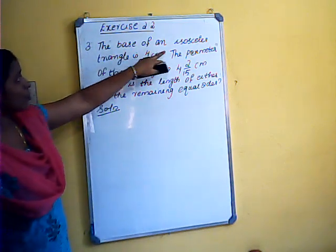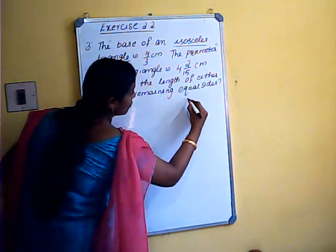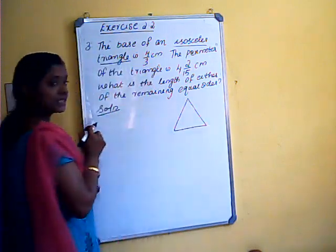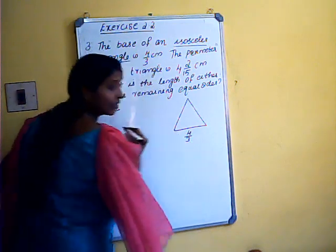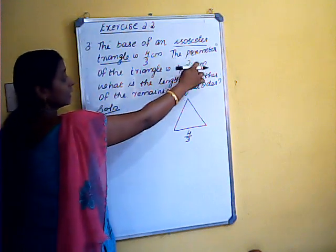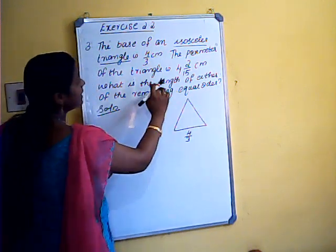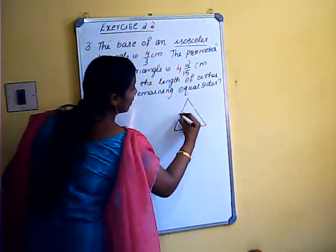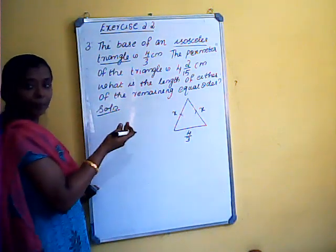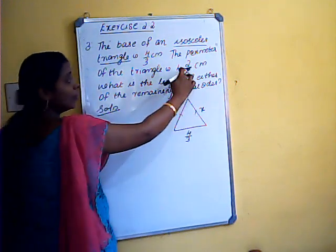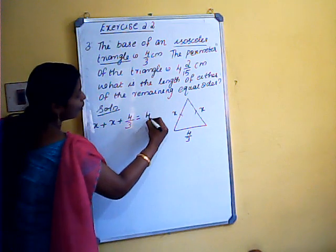Third problem: the base of an isosceles triangle is 4/3 cm. Two sides of an isosceles triangle are equal. The perimeter of the triangle is 4 and 2/15. We take one equal side as x, so the other equal side is also x. The perimeter equation is: x plus x plus 4/3 equals 4 and 2/15.